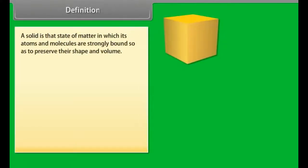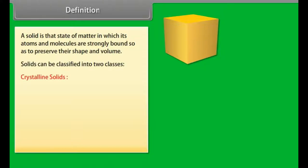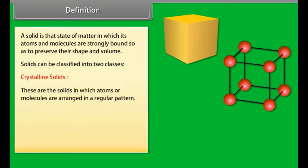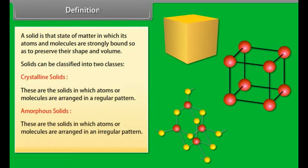A solid is that state of matter in which its atoms and molecules are strongly bound so as to preserve their shape and volume. Solids can be classified into two classes: Number 1 — Crystalline solids, in which atoms or molecules are arranged in a regular pattern; and Number 2 — Amorphous solids, in which atoms or molecules are arranged in an irregular pattern. These solids are also called glassy solids.